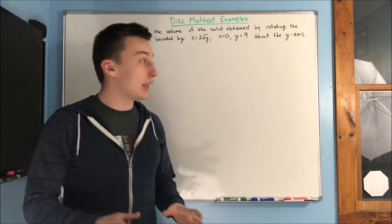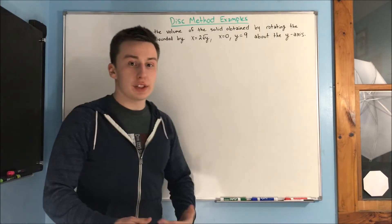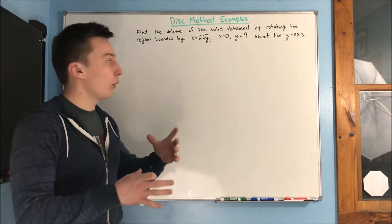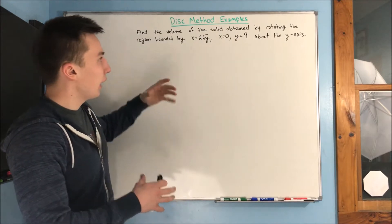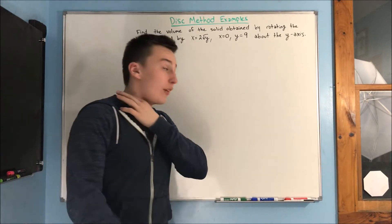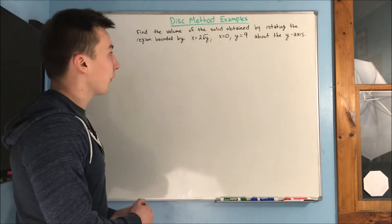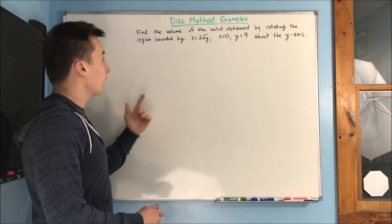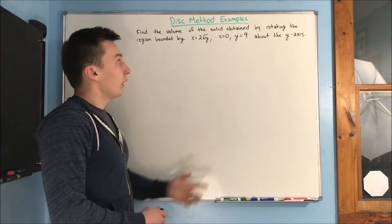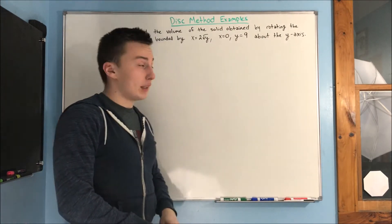In this video we are going to be doing some examples with the disk method. This is finding volumes of a solid by rotating a region about some axis. We want to find the volume of the solid obtained by rotating the region bounded by x equals 2 rad y, x equals 0, and y equals 9 about the y-axis.